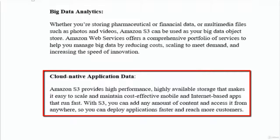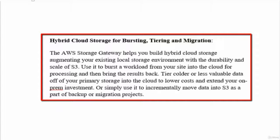S3 can also be used for cloud-native application data, since it's highly available and cost-effective. Additionally, S3 supports hybrid cloud storage for bursting, tiering, and migration. The AWS Storage Gateway helps you build hybrid cloud storage, augmenting your existing local storage environment with the durability and scale of S3. You can burst workloads from your site into the cloud for processing and bring results back, making it useful in migration projects — it's cheaper than on-premises storage and scalable to meet demand.